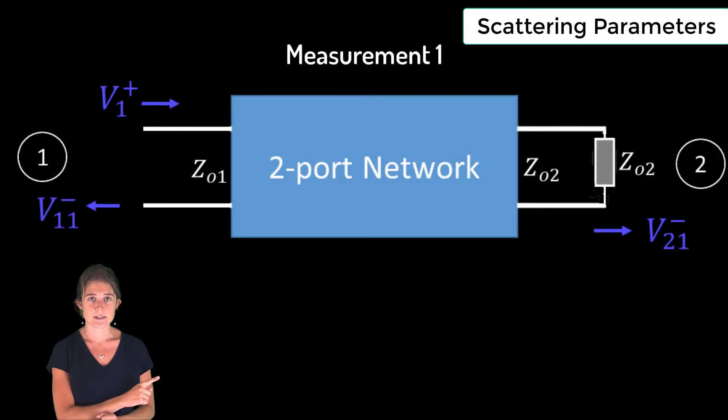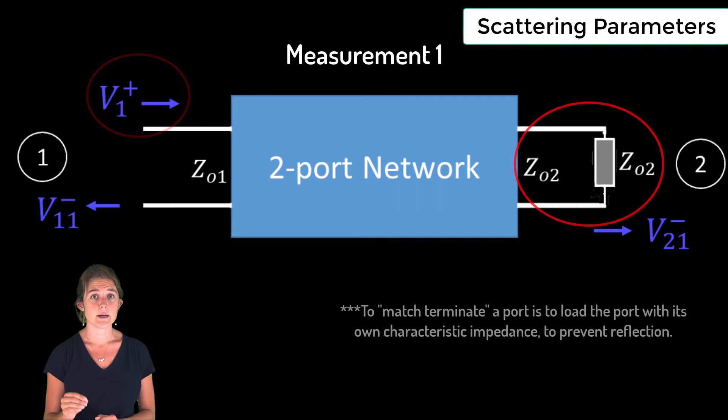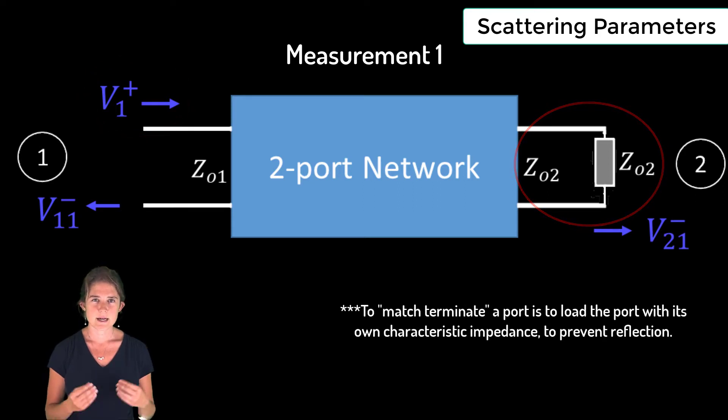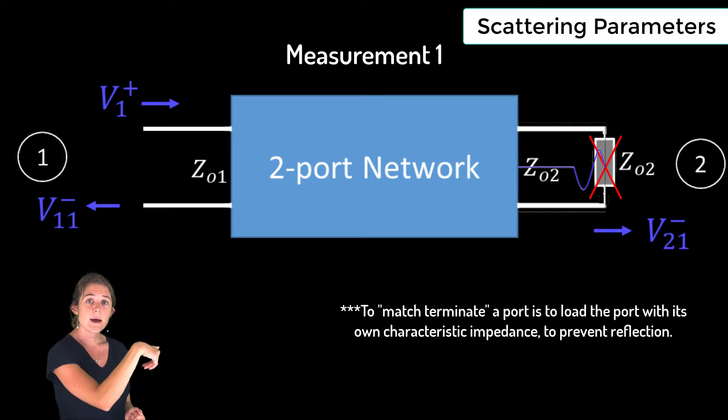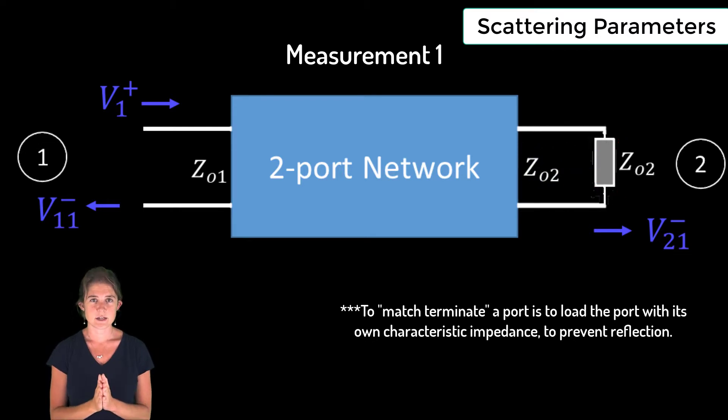This is the first measurement we need to characterize a two-port system. Note that we're only driving the first port. Also note that we must match terminate the second port. This is because if the second port is not match terminated, part of the signal leaving port two will reflect at the load and come back into the system as an input. From this measurement configuration, we can obtain V11, the amount that is reflected from the input at port one, and V21, the amount that is transmitted to port two from the input at port one.